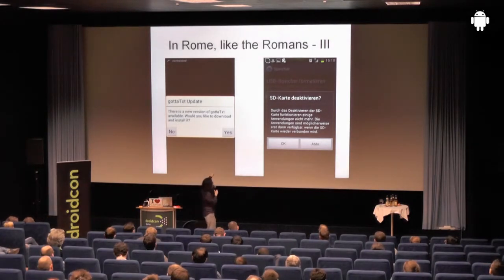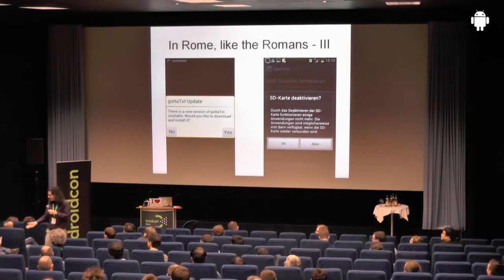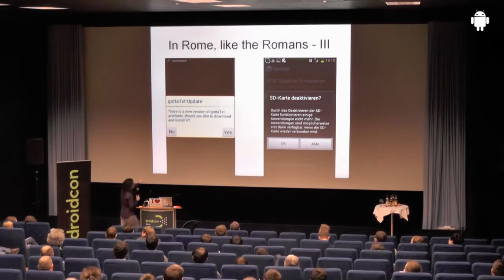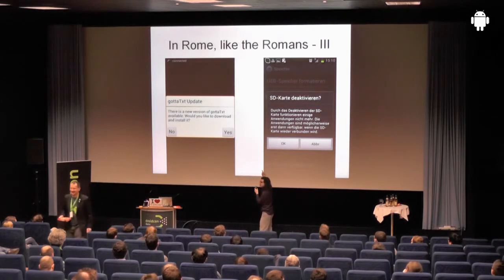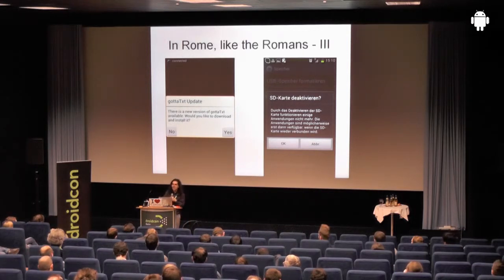Here we have two dialogues. The dialogue on the right is from the operating system. The dialogue on the left is from GotterText. Android specifies that the positive action must be on the left and the negative action on the right. With GotterText, it is inverted. These things sound small, but to the average user who automatically clicks the left side to agree, this can mean the world.